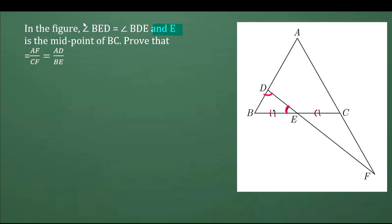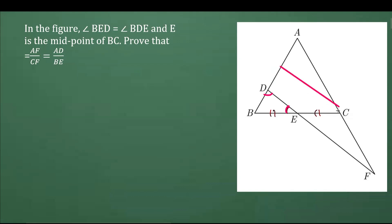To prove this, we are going to use the concept of BPT. For applying BPT, we need to draw a parallel line. From C, we are going to draw a line parallel to DF — that's the construction. We label this new point M, so DMC is parallel to DF.